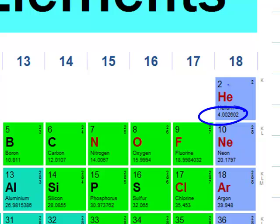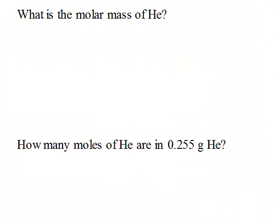So four Daltons for a single atom of helium is the same thing as four grams for a mole of helium atoms. Returning to our problem, we can write 4.00 grams per mole of helium.